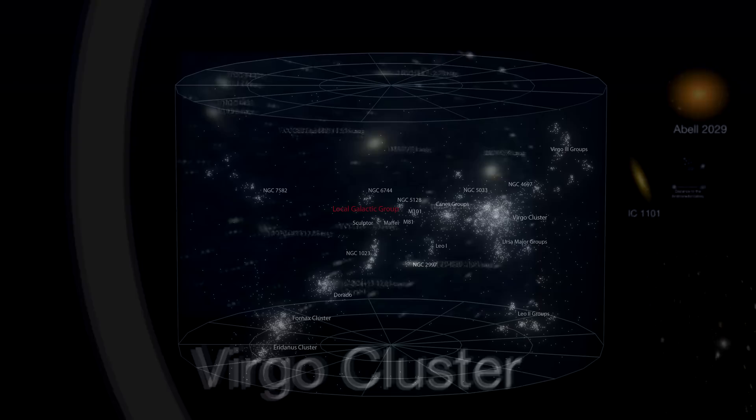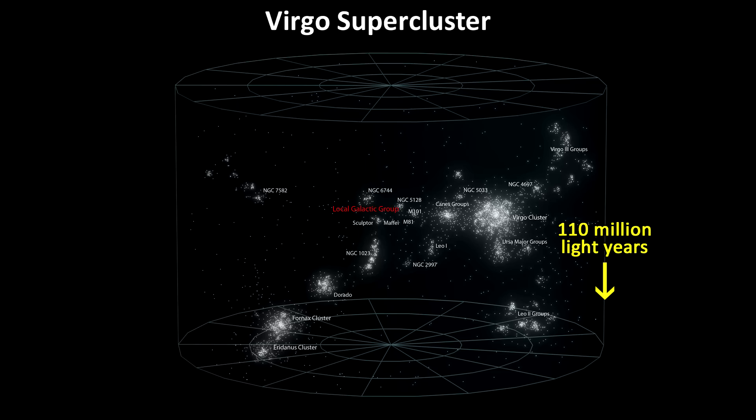It's about 110 million light years in diameter, or 10 to the 21, or 1 sextillion kilometers across. They're estimated to be about 10 million superclusters in the universe.